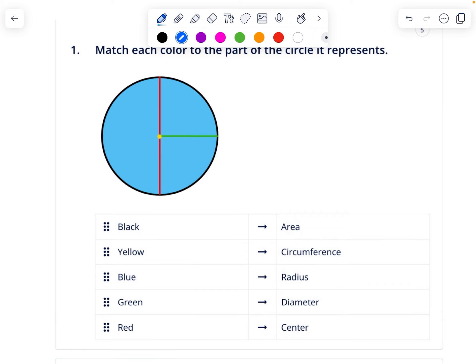The first question is to match each color on the circle to the vocabulary word that it represents. The black is the circle, the distance around the edge is called the circumference. The yellow is that very center dot of the circle. The blue is all the space inside, which is called area. The green is halfway across the circle, called the radius, and the red is all the way across the circle, which is called the diameter.